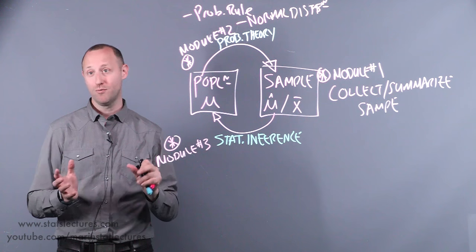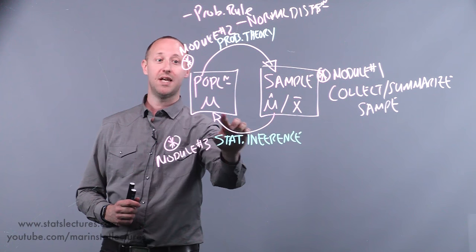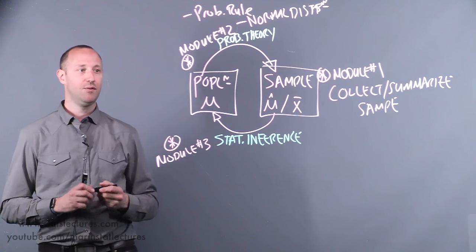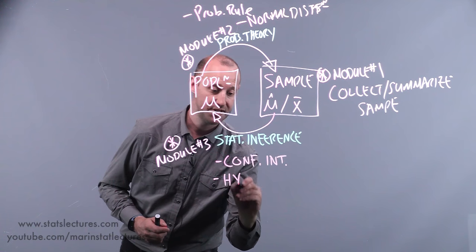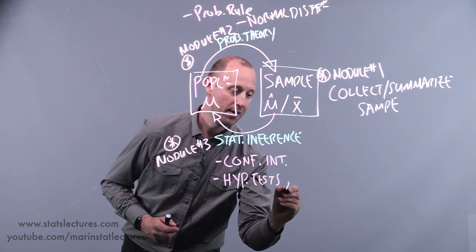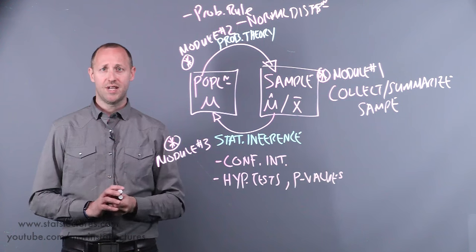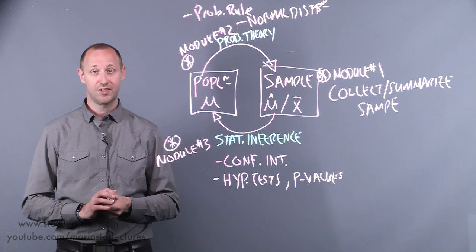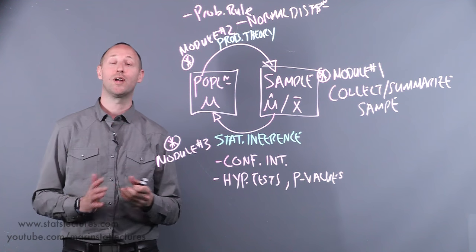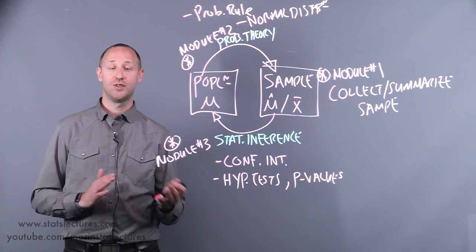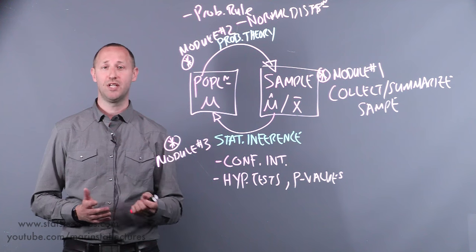This is where we move into a more real-world scenario where we don't know the truth about the population. We have to collect some data, and given our sample estimates, make statements about the population. Here we learn about things like confidence intervals, hypothesis tests, and p-values. Courses tend to progress through different forms of these depending on the type of data — numeric or categorical variables — and we'll also talk about parametric versus non-parametric approaches, as well as bootstrap or simulation-based approaches.